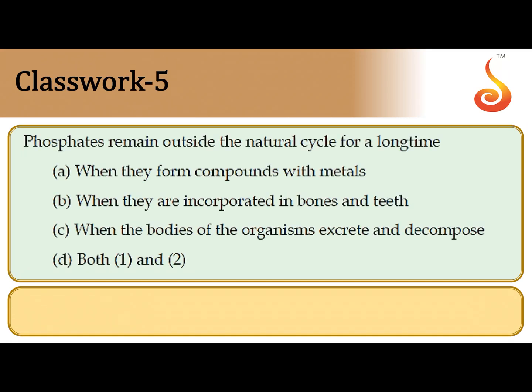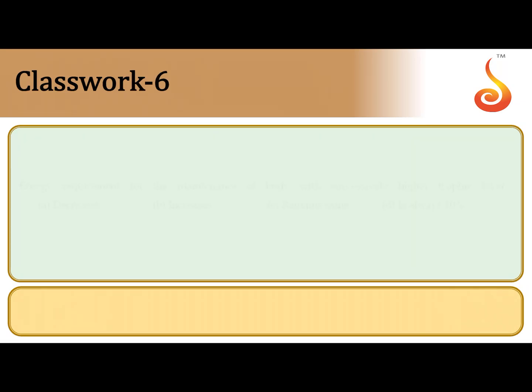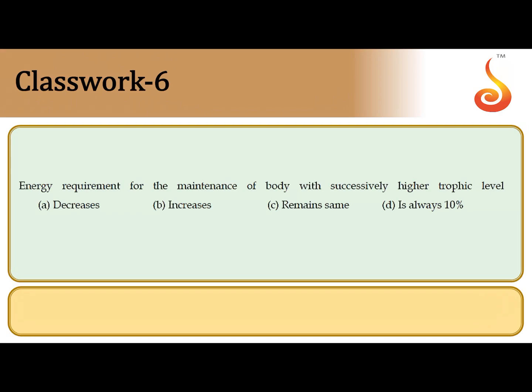The fifth question: phosphates remain outside the natural cycle. Basically, phosphates are found as mineral deposits within the earth's crust, buried in the earth, because phosphates form compounds with metals and are locked up in the form of metallic compounds. Phosphate may also get locked up within organisms, for example as components of bones and teeth. So it is both option A and B. Phosphate is not permanently locked up — it is a cycling pool. When an organism dies or decomposes, phosphate is released back into the phosphate cycle.